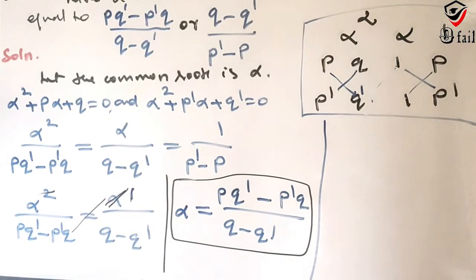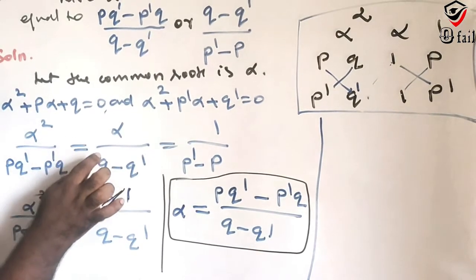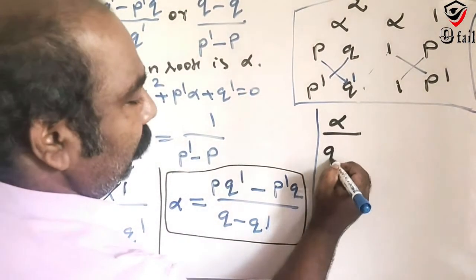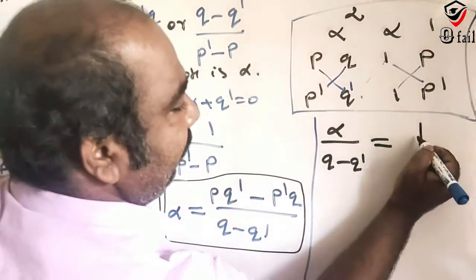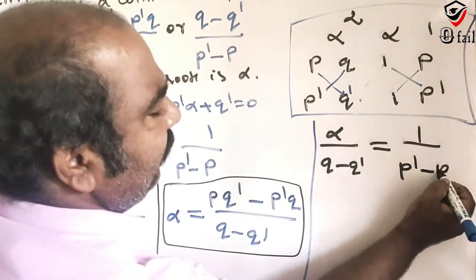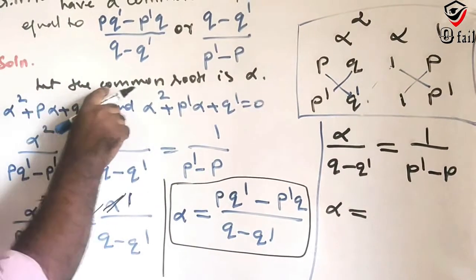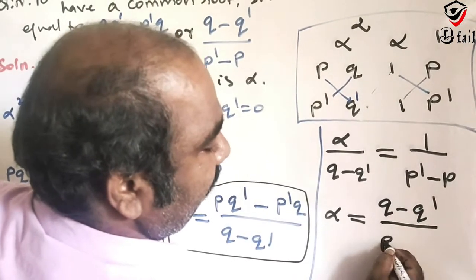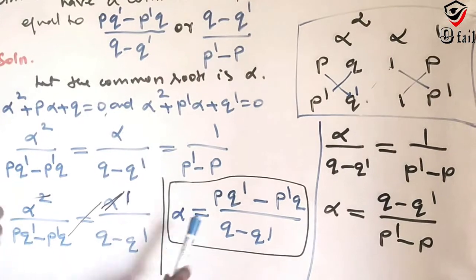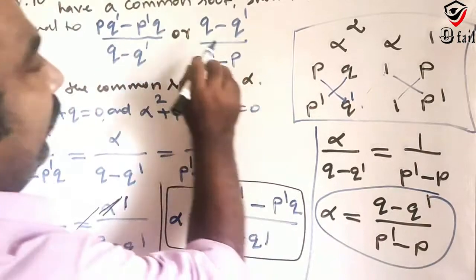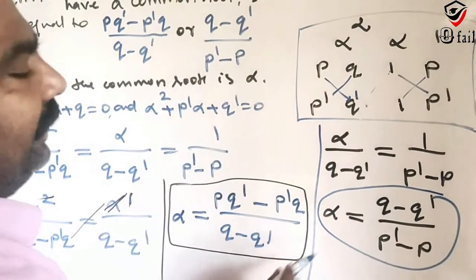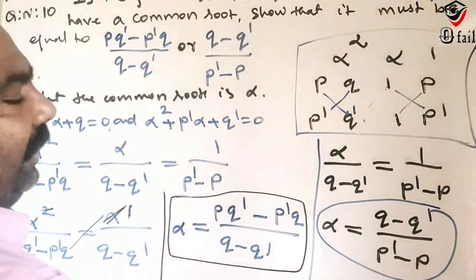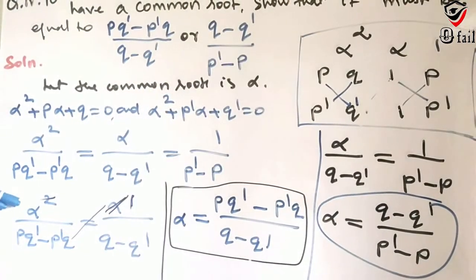For the second answer, using alpha / (q − q') = 1 / (p' − p), we get alpha = (q − q') / (p' − p). This gives us the second answer. Easy question, thank you students.